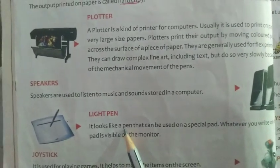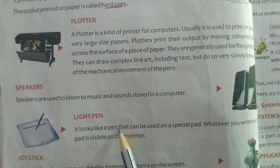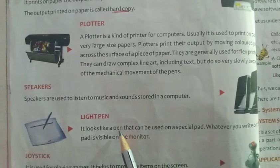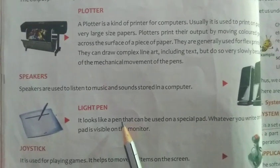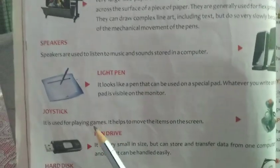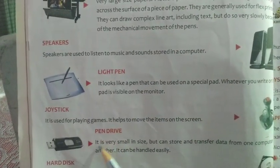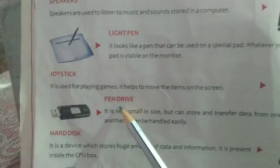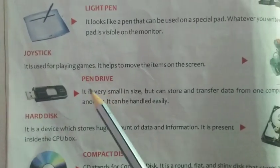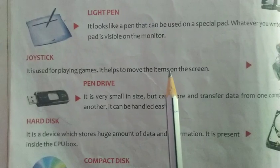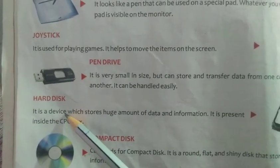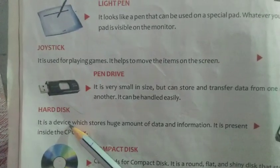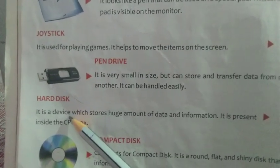Next is the light pen, which looks like a pen and is used for working with a touchscreen. The joystick is used for playing games. The pen drive is a portable device used to store data. Next is the hard disk, which is placed inside the CPU cabinet and can store a huge amount of data for future reference.